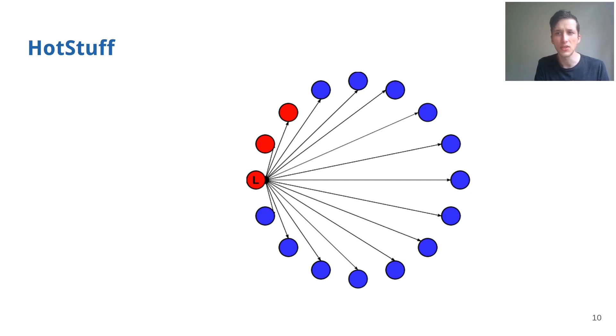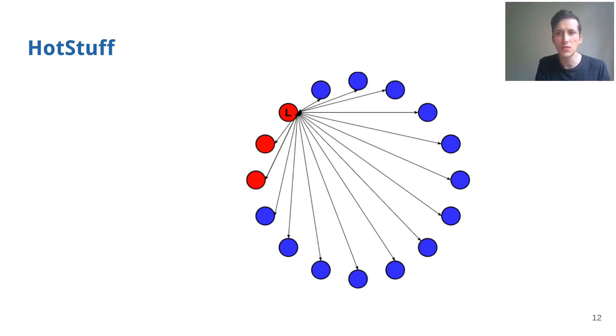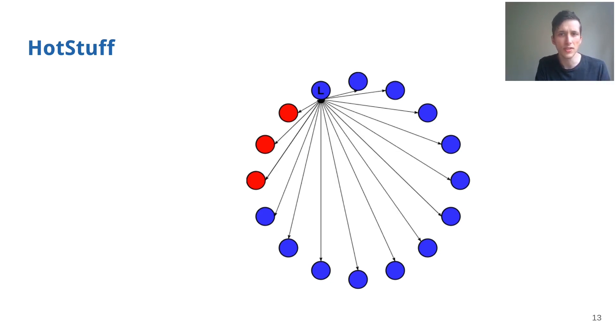HotStuff attempts to alleviate this by using a star communication scheme instead, where the leader broadcasts the blocks and then aggregates and disseminates the votes of the other processes. In the presence of failures, similar to pBFT, HotStuff switches the leader in a reconfiguration process until a correct process is reached and consensus can again be achieved within an optimal number of reconfiguration steps.